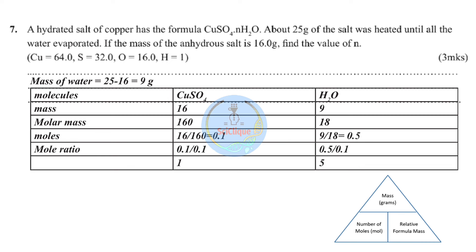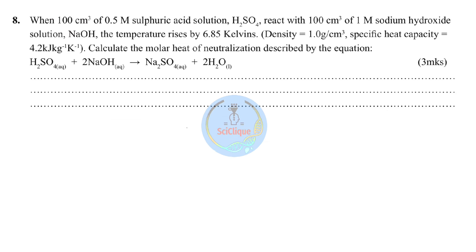Last step — mole ratio. The smaller value is 0.1, so divide both by 0.1: copper gives 1, water gives 5. Therefore n = 5, meaning there are five moles of water of crystallization.